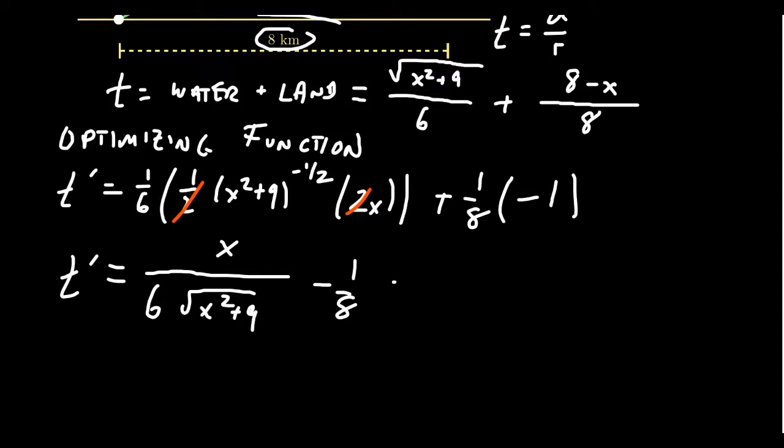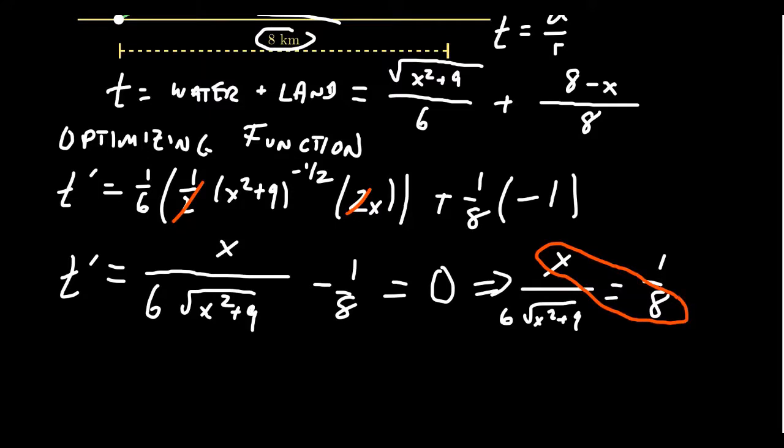We're going to have x on top for the first piece, and then we get 6 times the square root of x squared plus 9, and then we subtract 1/8 from that. This is our t prime. We're looking for critical numbers, set this equal to 0. You don't necessarily have to worry about cleaning up the derivative too much. Just start solving for x. You're going to get x over 6 times the square root again, and this will equal 1/8. Since we have a proportion equal to a proportion, let's cross multiply.